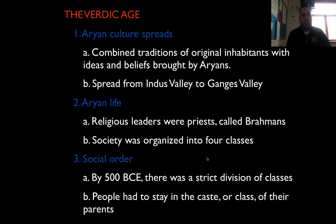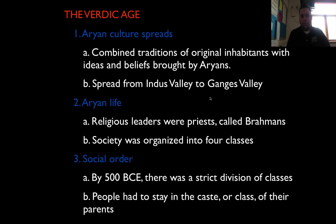This leads us to the Vedic Age, when the Aryans came in — this Aryan culture. Basically, the Aryans were a civilization, a group of similar culture, that came in, found a passage through the Himalayan mountains, came through the Hindu Kush Pass, and ended up taking and controlling this area. What they did was combine traditions of the original inhabitants and their beliefs with their own, which helped unify the people they were about to conquer.